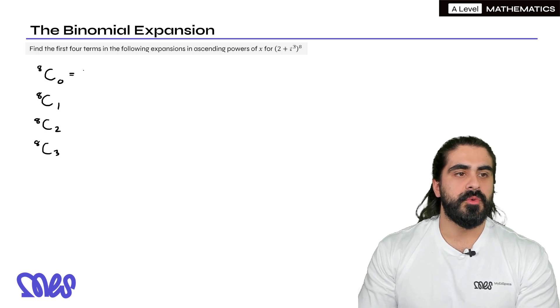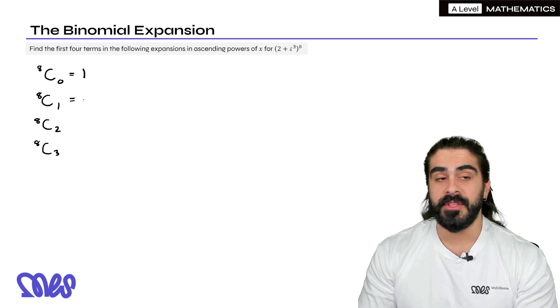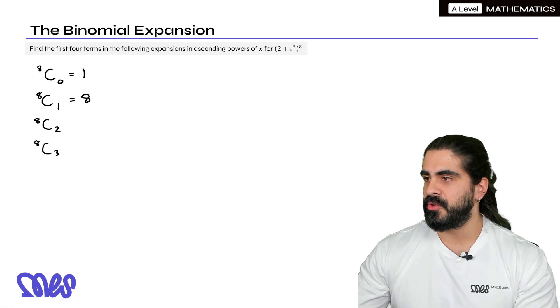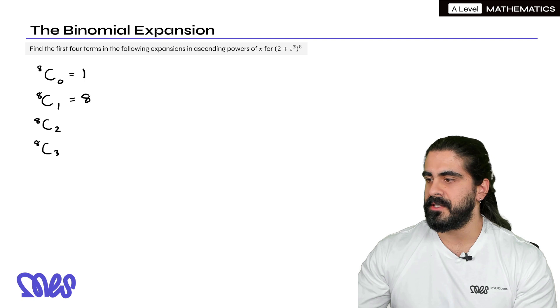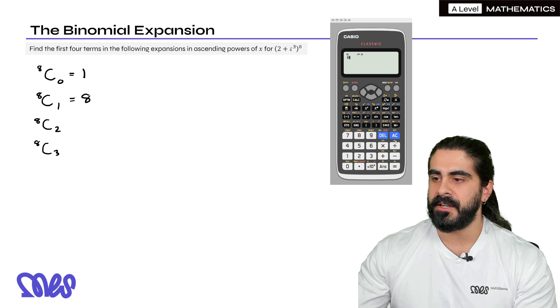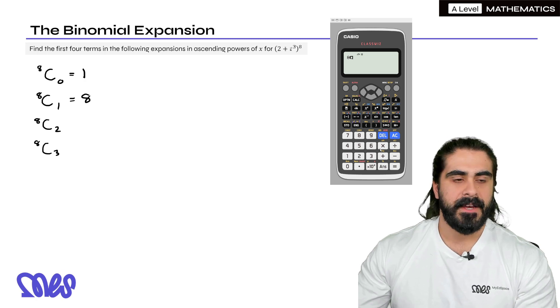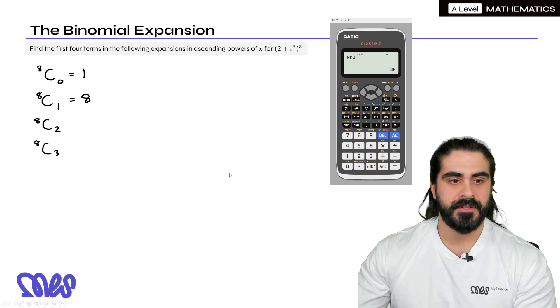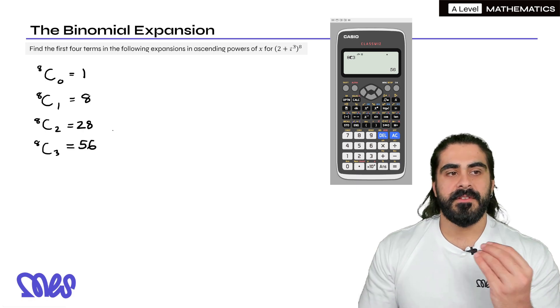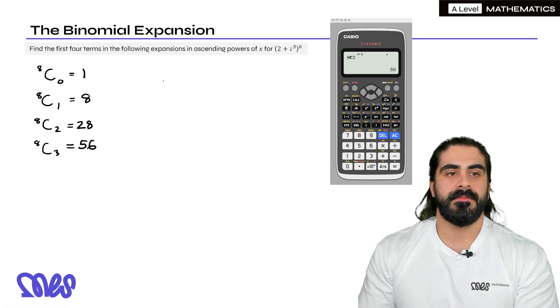The first two computations are actually quite easy, but in your calculator you would press eight, then shift, then the divide button has that choose button, and then we would put two. So we have 28, then eight choose three, just go back, change it to three, 56, and these form the coefficients of our binomial expansion.